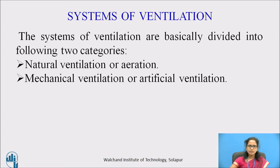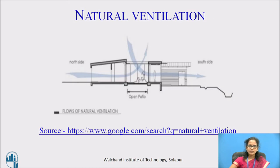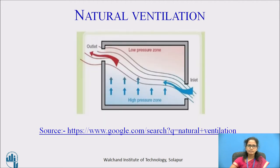The systems of ventilation are divided into two: first, natural ventilation; and second, mechanical ventilation. Natural ventilation allows outside air to enter a room through openings such as doors, windows, and ventilators. It is considered economical in flats and houses, but uneconomical in office buildings, theatre halls, auditoriums, and assembly halls.